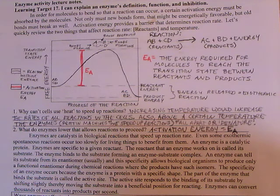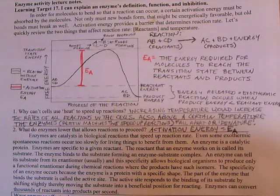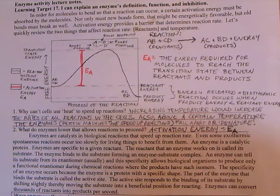Enzymes are catalysts in biological reactions that speed up reaction rate. Even some exothermic spontaneous reactions occur too slowly for living things to benefit from them. An enzyme is a catalytic protein. Enzymes are specific to a given reactant. The reactant that an enzyme works on is called its substrate. The enzyme binds to the substrate, forming an enzyme-substrate complex.